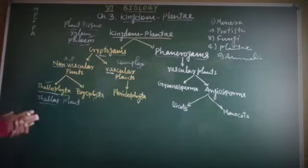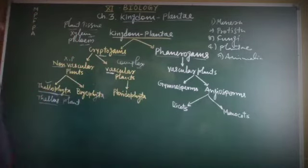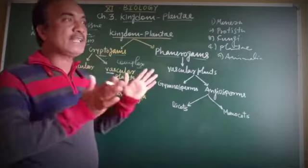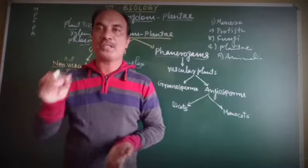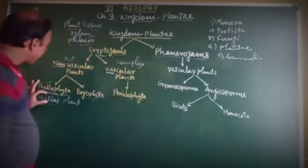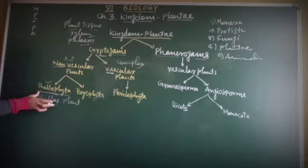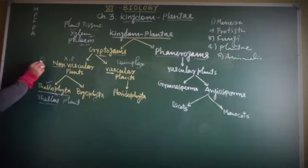Thallophyta means plants that are thallus-like — meaning there is undifferentiation of root, stem, and leaves. These plant bodies are called thalloid. The plant groups with undifferentiated root, stem, and leaves are called Thallophyta.